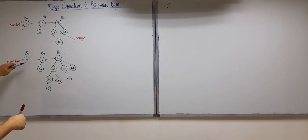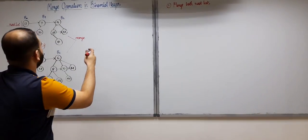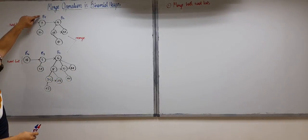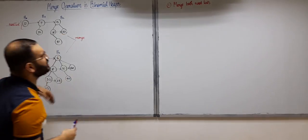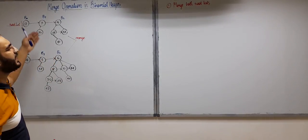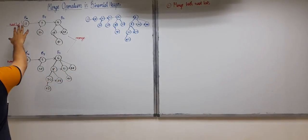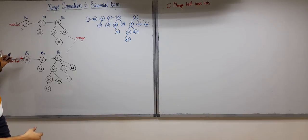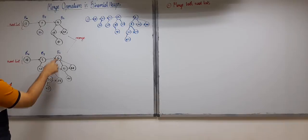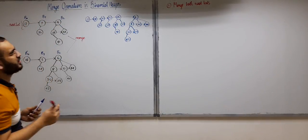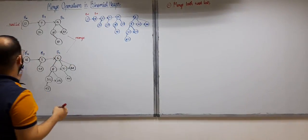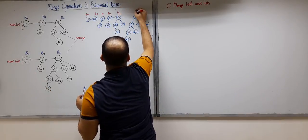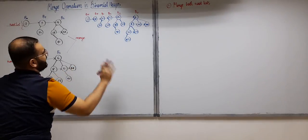In the first step we merge both root lists. After combining, we get a single list containing two B0s, two B1s, one B2, and one B3. Combining both root lists is like merging two sorted linked lists, since both lists are sorted by binomial tree order. So the merged root list is: B0, B0, B1, B1, B2, B3.